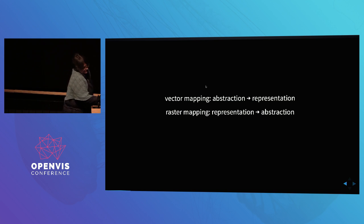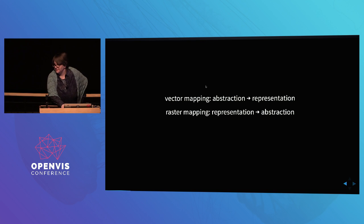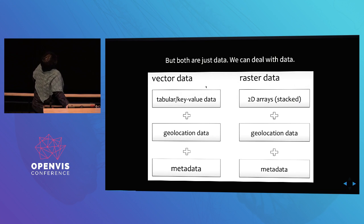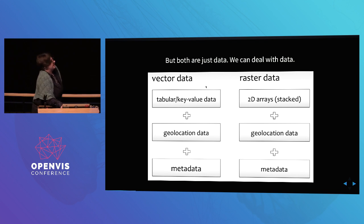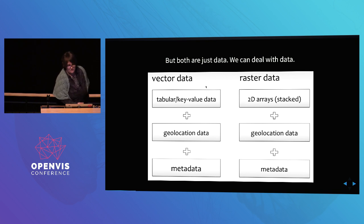I'm not sure - maybe this is just speculation. This is a data visualization conference, not an image analysis conference. But both are just data, and if you're a developer or can program, you can deal with data. Vector tables have geolocation data and metadata associated with them. Metadata is extremely important because it tells you what's in your data. Raster data is 2D arrays stacked - sometimes you get 5D things with time, height, and all sorts of dimensions, with geolocation data and metadata.